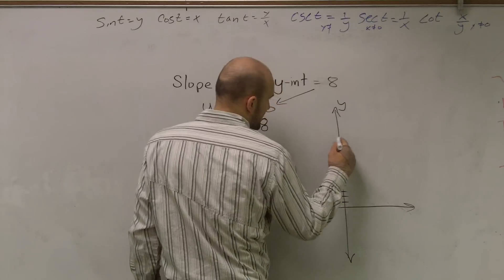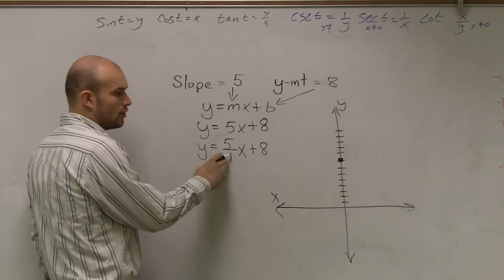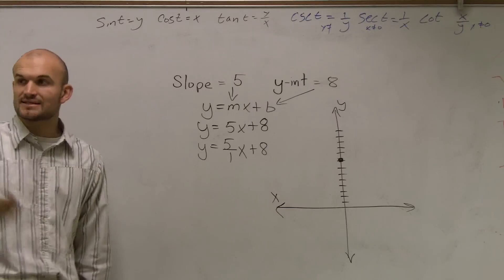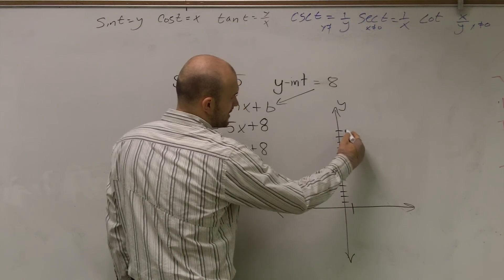I can go up 1, 2, 3, 4, 5. Then it tells me to go over 1. Since that's positive, that tells me to go to the right. So I go over 1. The next point is right there.